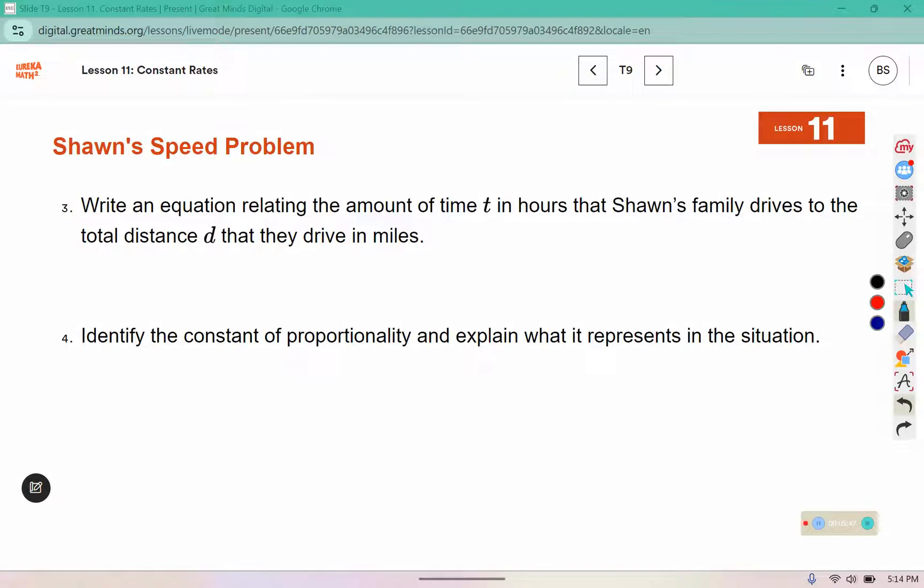Now we need to write an equation. The difference between an equation and an expression is an equal sign. We were using this format for writing equations for proportional relationships. Here I have my constant of proportionality and the value that was on the x-axis. This distance was on the y-axis, so our equation should say d equals 70t. Identify the constant of proportionality, that was 70, that was our unit rate.